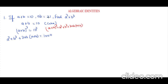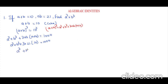Now, a plus b is 10 and ab is 21, so I am just going to apply the values here. It is a cube plus b cube plus 3 times ab, which is 21, and a plus b, which is 10, equals 1000. So, a cube plus b cube plus 3 times 21 is 63, and 63 times 10 is 630, equals 1000.